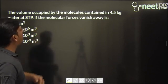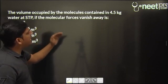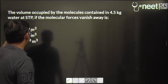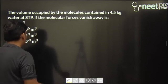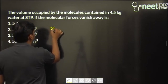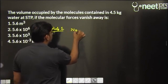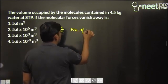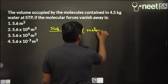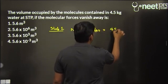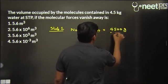The volume occupied by the molecules contained in 4.5 kg water at STP. Now in step one, we will first calculate the number of moles. Actually this question is basically of mole concept, number of moles, which is given mass in grams divided by molar mass.